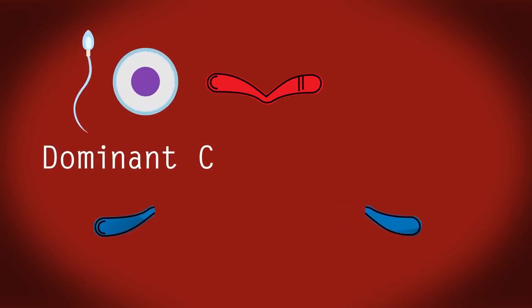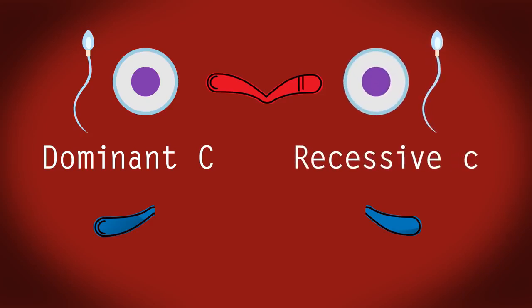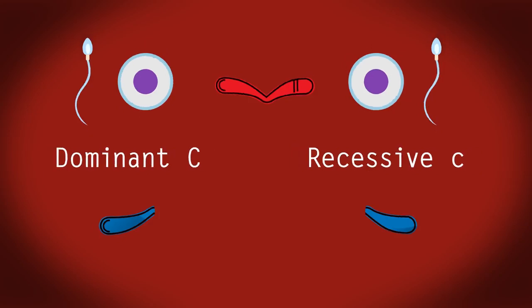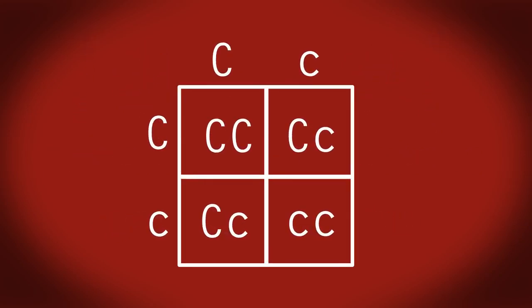So the dominant C is pulled one way to form one sperm or egg cell and the recessive c of the other chromosome is pulled the other way to form a different sperm or egg cell. So half the sex cells will have the dominant C and the other half will have the recessive c. So this C represents half of the sex cells and this c represents the other half of the sex cells.